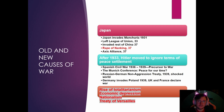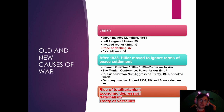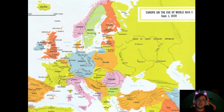Now we have the acronym RENT, similar to MAIN from World War I. R is the rise of totalitarianism, E is economic depression, N is nationalism, and T is the Treaty of Versailles. These are the causes of World War II. And on the eve of World War II, this is what Europe looked like.